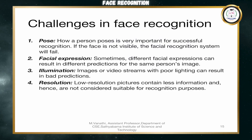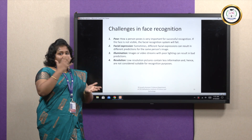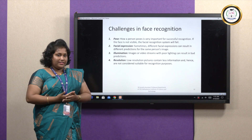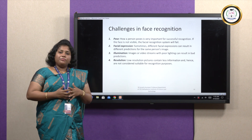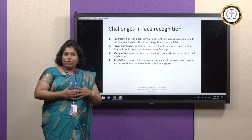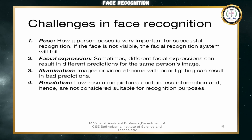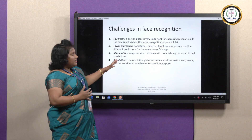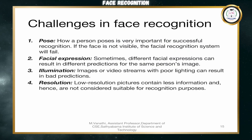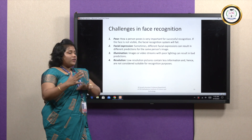What are the challenges we face in face recognition? First is pose — if a person is facing right side, left side, or diagonally, that is a challenge. Second is face expression — we can handle pose with DeepFace, but if the person is crying, sad, or angry, the facial features will differ and we cannot detect them. Next is illumination — if a person is in low light or a dark place, that is poor lighting. Last is resolution — if the image is blurry with low pixel count, that is a low resolution image.